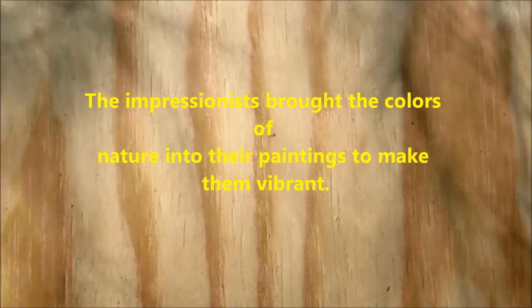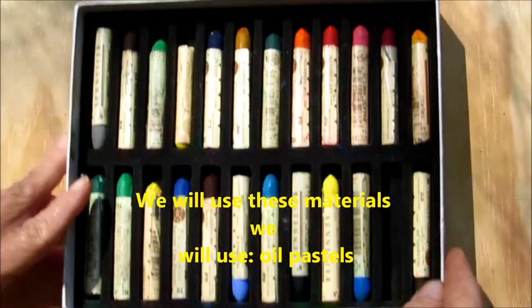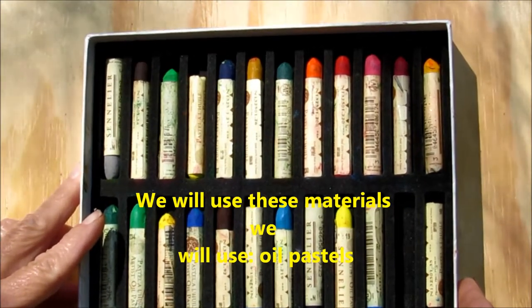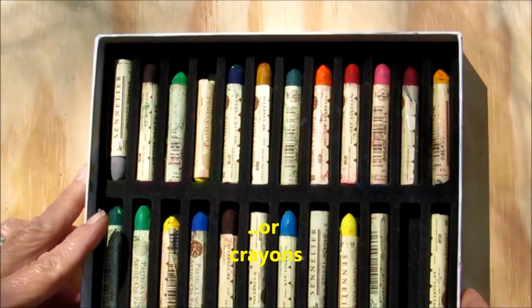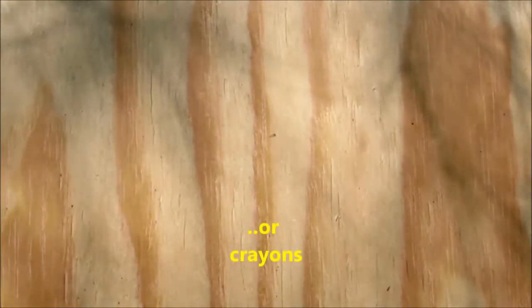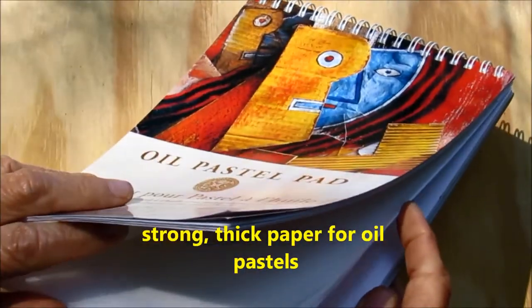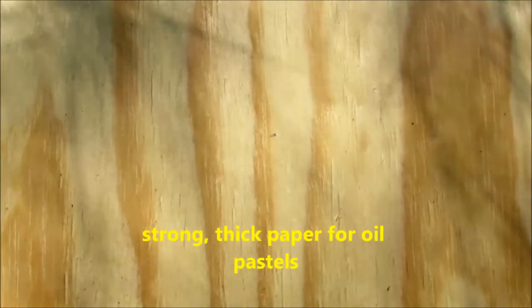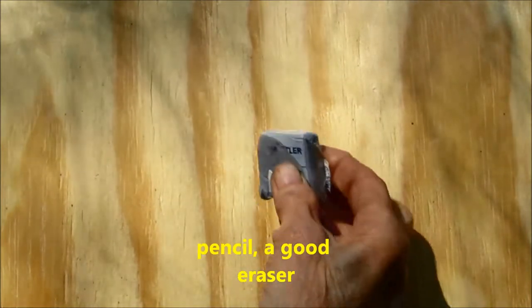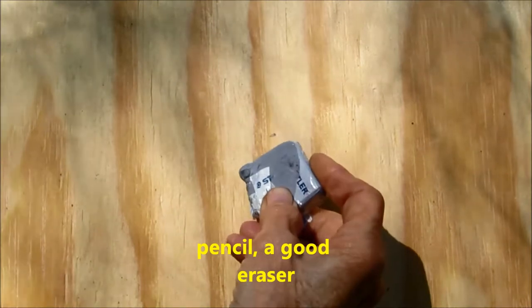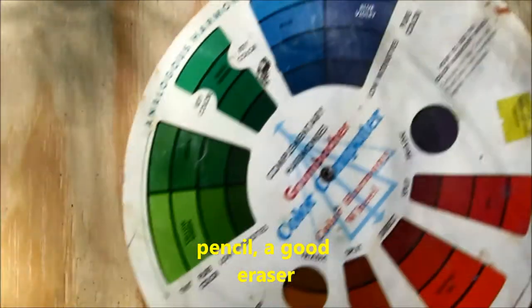We're going to use these materials: oil pastels. You can use crayons, but the colors will not be quite as vibrant or bright. If we're using oil pastels, you should get a strong, thick paper, a pencil, and a good eraser. This is a kneaded rubber eraser for your pencil drawing. And a color wheel.